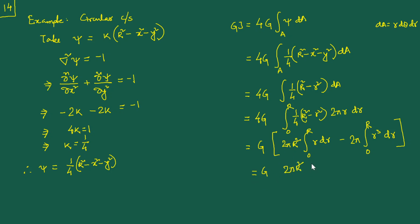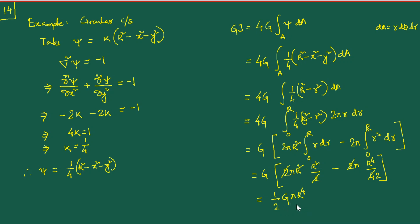The result is GJ = ½Gπr⁴. You can compare with the result from undergraduate studies: the polar moment of inertia J = ½πr⁴, which matches nicely with what we obtained using the Prandtl stress function. However, this should not be the end of things — we want to go to cross-sections which are not circular, and for that we will use examples illustrated through symbolic Python and Jupyter notebook.